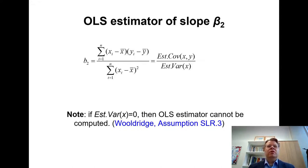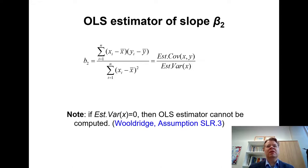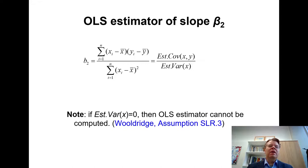The slope coefficient cannot be calculated if the sample variance of X is equal to zero. In practice, there must be some variation in our explanatory variable X. If X is just a constant, we cannot calculate the OLS estimator. In the Wooldridge textbook, this is mentioned as assumption number three of simple linear regression, and it is often stated explicitly. In my view, it is more like a data requirement — if you have no variation in your data, then your data is useless rather than your estimator being useless.